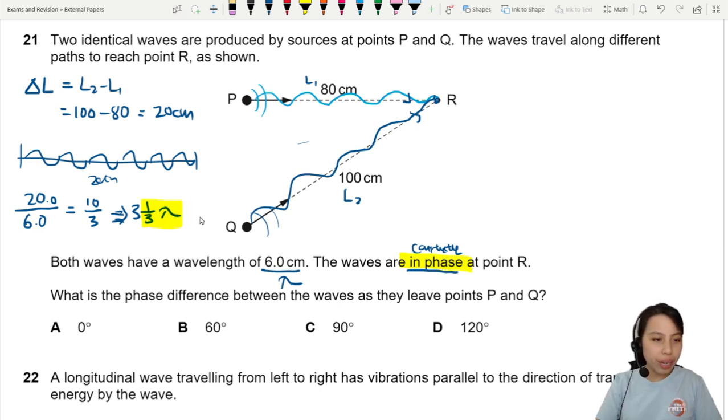How do you draw 1 third of a wavelength? Let me try. So we have 1, 2, 3. So 3 and a 1 third. 1 third? Like that. Then reach ready. So this is the path difference between both of them.